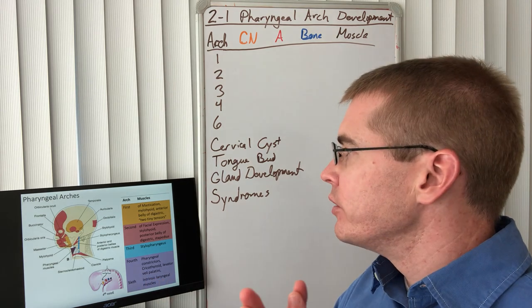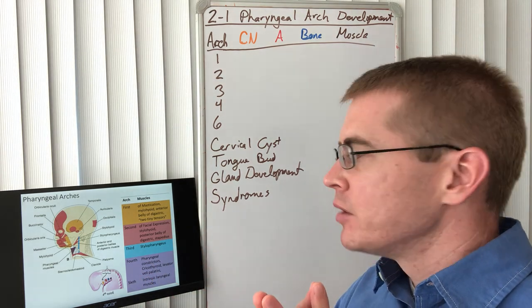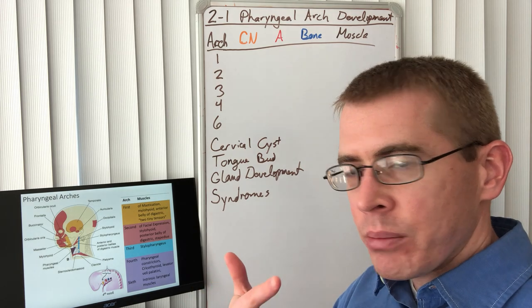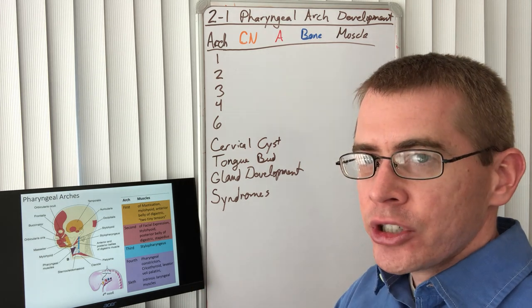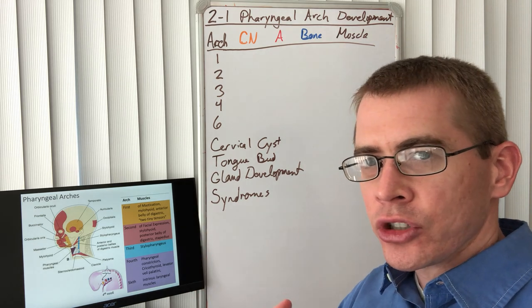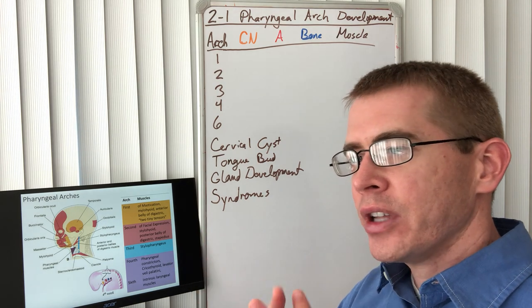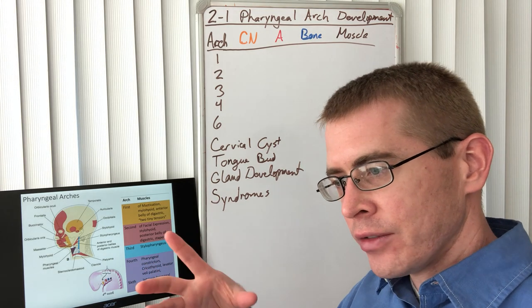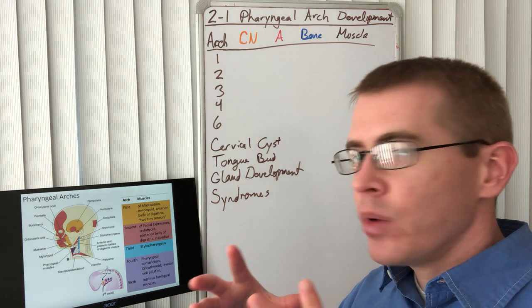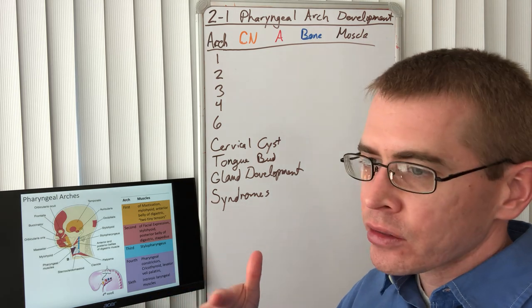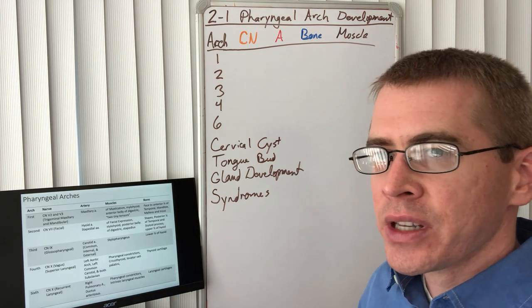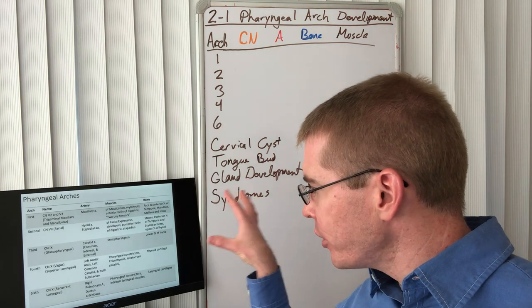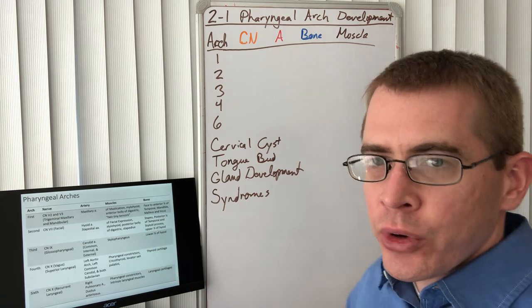And finally the muscles. The first arch the muscles of mastication and the other muscles innervated by trigeminal. Second is the muscles of facial expression along with stylohyoid and the neck muscles innervated by facial. Third is the stylopharyngeus as you'd expect innervated by glossopharyngeal. And then fourth is the vagus nerve and its innervation of pharyngeal constrictors as well as a few others that vagus nerve innervates. And then sixth the intrinsic laryngeal muscles from the recurrent laryngeal nerve. So it all makes sense. I've provided you in your slide deck this table that is comprehensive so you can use this as a basis for your studies.